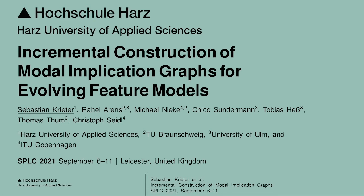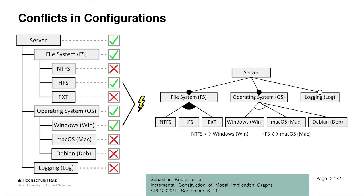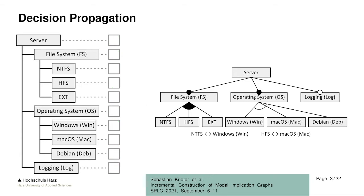Let me first introduce you to what implication graphs are and what they are for. Imagine you have a configuration and you're manually selecting features. As you have a feature model with different constraints, you may end up with conflicts in your configuration. To avoid this, you can use decision propagation, which is an interactive configuration process where you select one feature and then decision propagation will determine the state of all the other features based on your decision. So you can select and deselect many other features just based on this one decision.